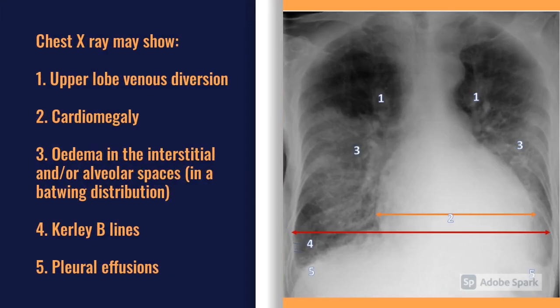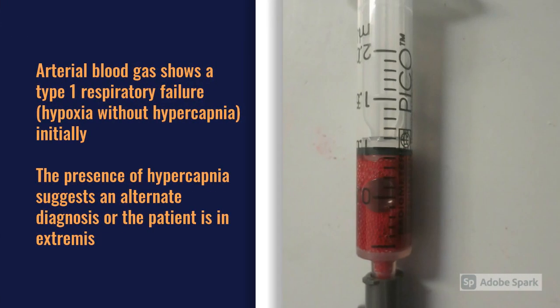Chest X-ray may show bilateral effusions, cardiomegaly, upper lobe venous diversion, and edema in the interstitial or alveolar spaces — a bat-wing distribution — and Kerley B lines, which are a classic finding. An arterial blood gas is important; what we want to look for is the presence of hypercapnia, which suggests an alternate diagnosis or that the patient is in extremis and at peri-arrest from heart failure.